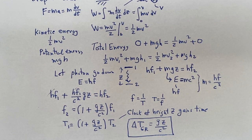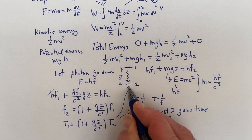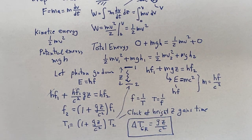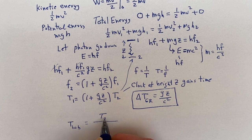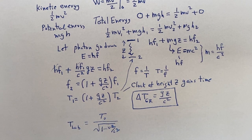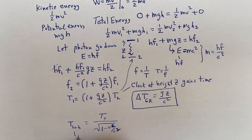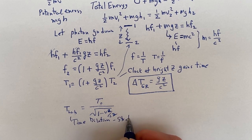The clock at height z, as it ticks, accumulates a fraction of a second more compared to a clock on the ground. That is a wild result. From special relativity, the lab time relates to proper time in a moving frame by a factor of 1/√(1 - v²/c²), the famous time dilation result.